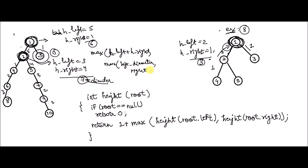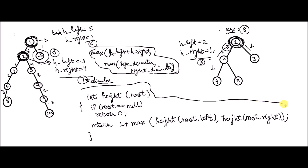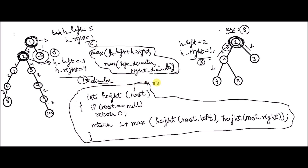By left diameter and right diameter, I mean the case when the solution doesn't lie through the original root node. It might sound a bit confusing right now but things will be clear in the coding part. I've written this height-calculating recursive function. It simply tells us the height of left subtree and right subtree. For calculating the height of the left subtree, we pass root.left into it, and for the right subtree we pass root.right.